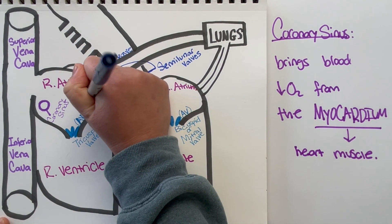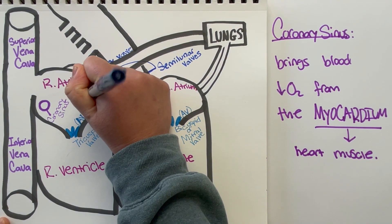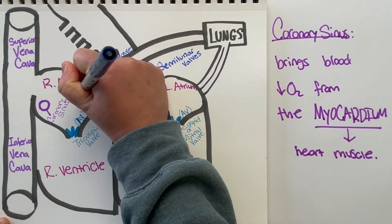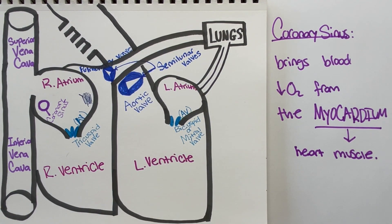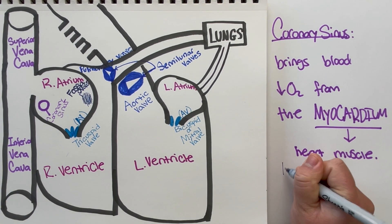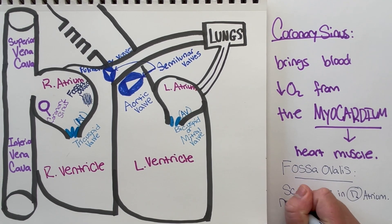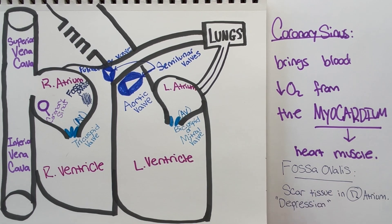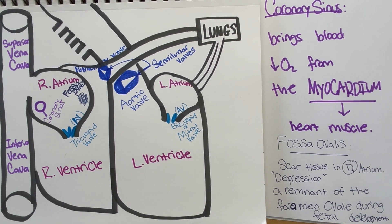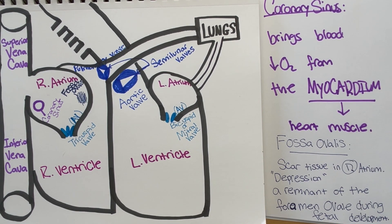The next important structure in the right atrium is the fossa ovalis — a small depression of scar tissue. The fossa ovalis is a remnant from a hole that was once there. When you were a fetus, you had a hole between your right and left atrium known as the foramen ovale. As you developed and grew, it started to close, and when it closed, it left scar tissue known as the fossa ovalis.